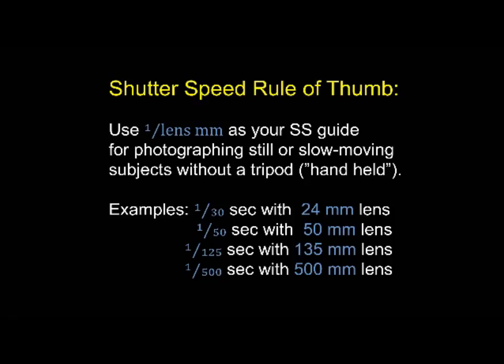Here's my rule of thumb for shutter speeds — what I think of out in the field. When photographing something standing still or moving very slowly, take the length of your lens in millimeters and make that the denominator of a fraction — so one over 100 for a 100mm lens — and that tells you what shutter speed you can use without a tripod. For a slow-moving subject you can use a slower shutter speed with a wider lens, but with a longer lens you need a faster shutter speed to get the same effect.